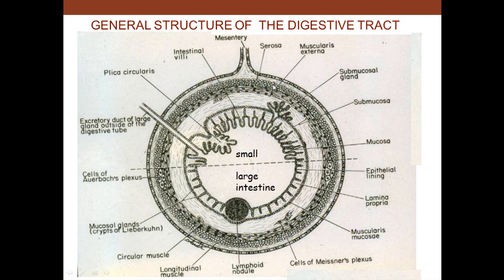On the inside we have the epithelium lining the lumen, and then the lamina propria — connective tissue on which the epithelium sits — located between the epithelium and the muscularis mucosa. The muscularis mucosa, the lamina propria, and the epithelium together make up the mucosa.